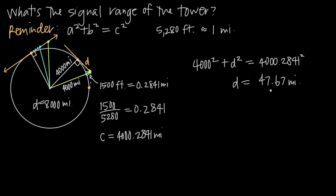So the signal range of the tower is about 47 and two-thirds miles in each direction. As a practical application, a cell phone company would build another tower about 47 miles away — which, at the same height, can also reach 47 miles in each direction. That way, no matter where a person is standing on the earth, they'll be covered by one of the cell towers. This tells the company exactly how far apart to space their cell towers — and that's how you use the tangent line of a circle to solve a problem like this.